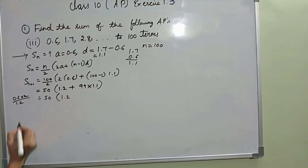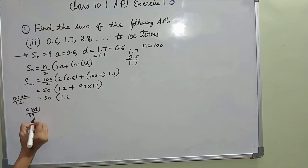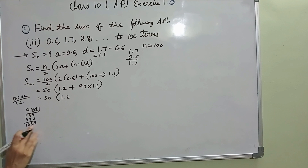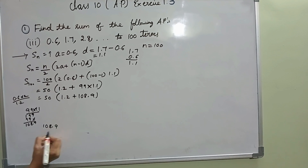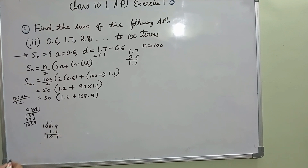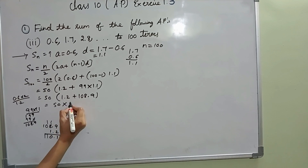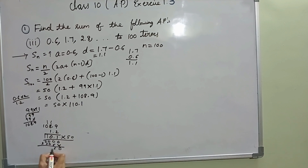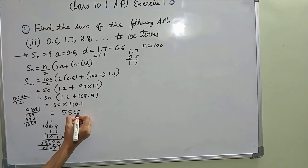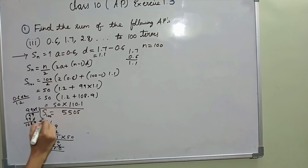99 into 1.1 equals 108.9. Adding 1.2 plus 108.9: 9 plus 2 is 11, carry 1, giving 110.1. Then 50 into 110.1: working through the multiplication gives 5505. After placing the decimal point, S100 value is 5505.